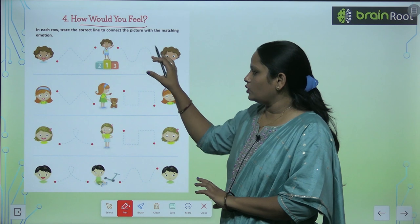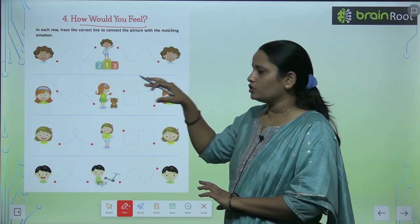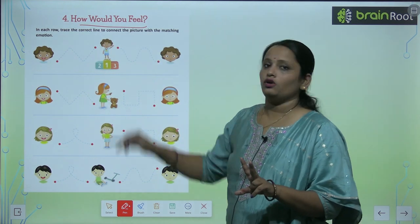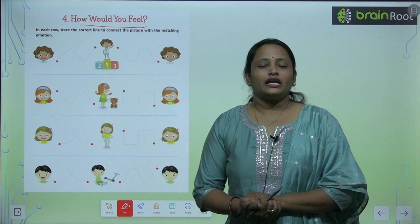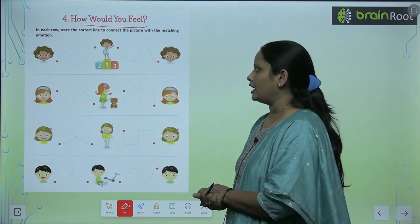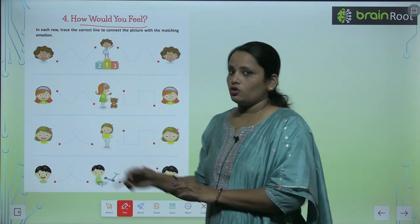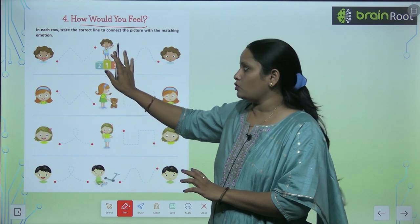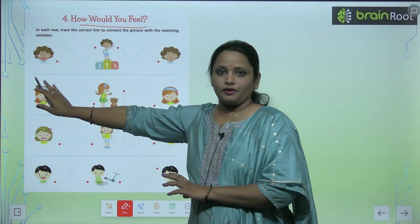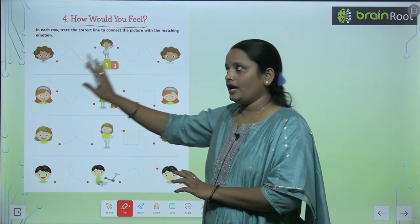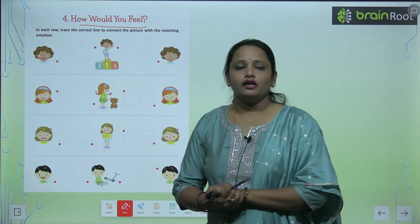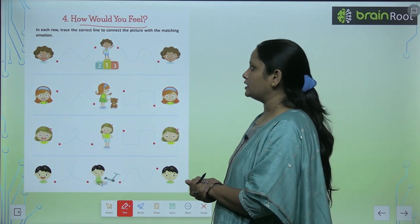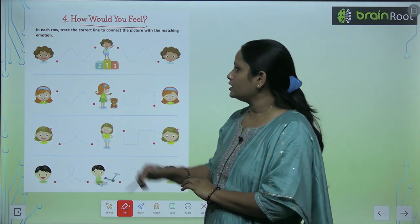Here you can see, in every row, two pictures are made. The emotion in the first picture should match the emotion in the other picture. So what you want to do is match them. Let's do it.